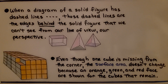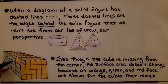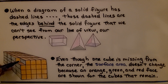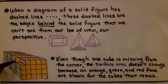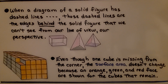A quick note: when a diagram of a solid figure has dashed lines, those are edges behind the solid that we can't see from our perspective. Also, even if a cube is missing from the corner of a rectangular prism, the surface area doesn't change — because the remaining faces (orange, green, and red) replace the missing cube's faces. Whether the cube is punched inward or outward, the surface area stays the same.